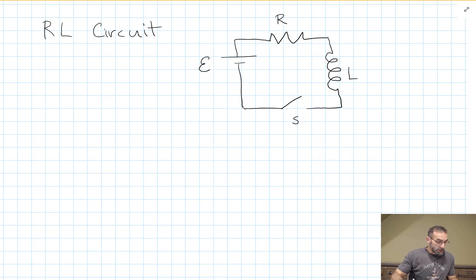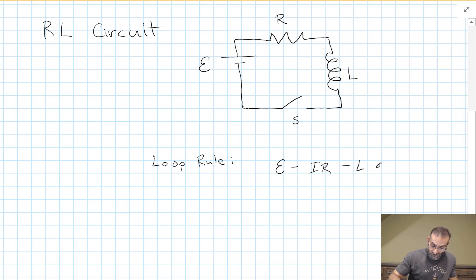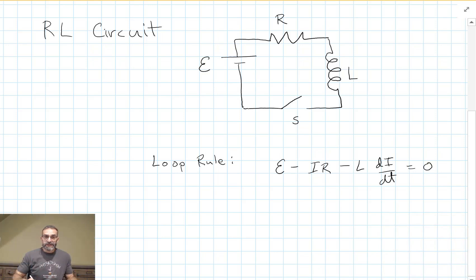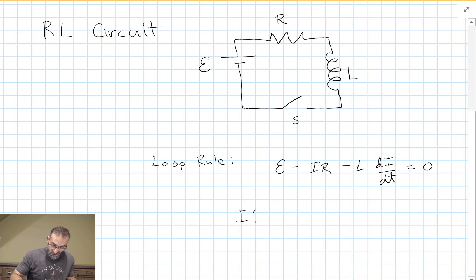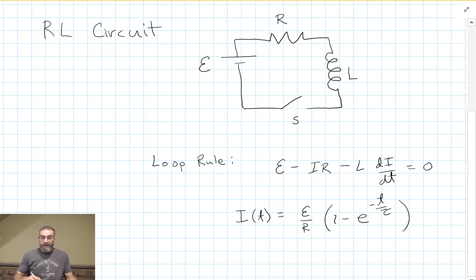If we go around this circuit and do the loop rule, we get a differential equation. Your book works through the details, but the solution is that the current as a function of time is the maximum current times 1 minus e to the minus T over tau, where tau is the time constant of this circuit.